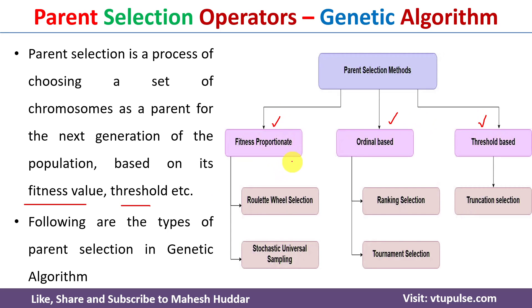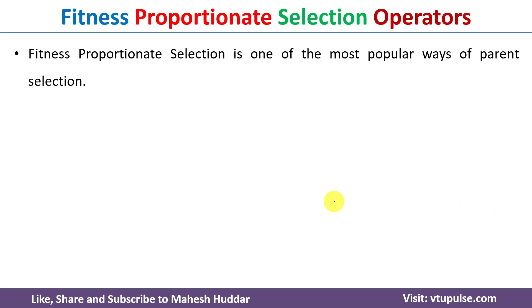There are mainly two fitness-based selection techniques: the roulette wheel selection technique and stochastic universal sampling. In ordinal-based selection there are two techniques: ranking selection and tournament selection. The threshold-based technique is known as truncation selection. We will discuss each of these techniques one by one with the help of a simple example.